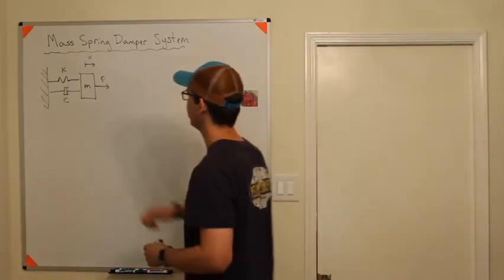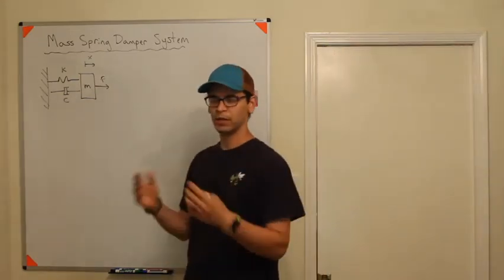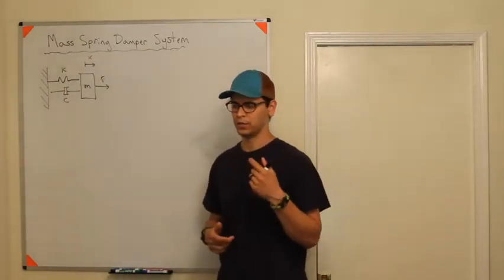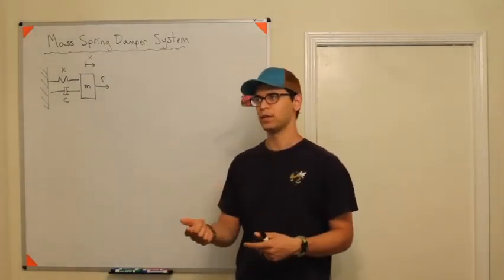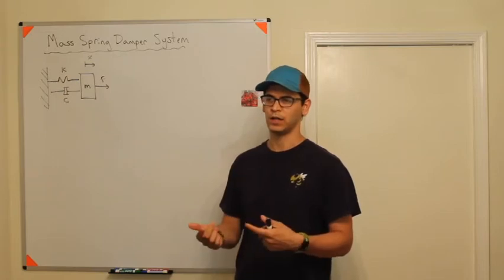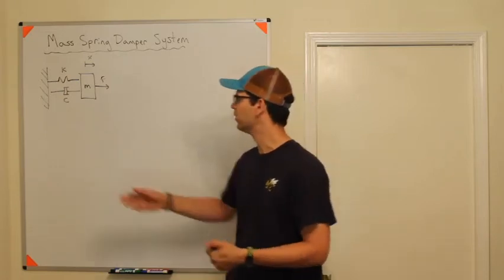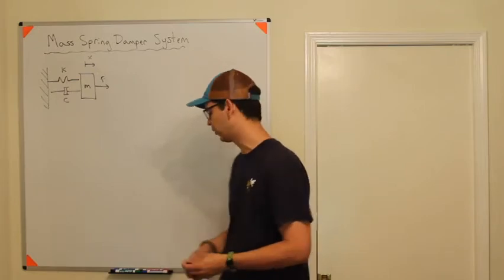In this example I want to do a mass-spring-damper system. Same thing as we were doing before - I'm going to do a free body diagram, get the equations of motion, and if I have time I might solve the differential equation. The problem is we don't have parameters here, so it's second order.